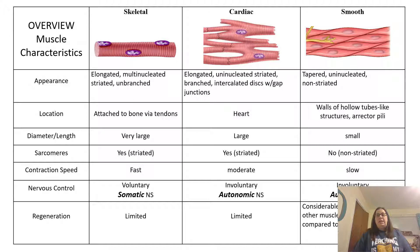For smooth muscle, they are tapered, uninucleated, and not striated at all. The walls of your hollow organs are made up of smooth muscle, as well as the erector pili in your skin. Their diameter and length is small, and they do not have any sarcomeres. Their contraction speed is slow and they are controlled involuntarily by your autonomic nervous system. They do have a considerable ability to regenerate compared to skeletal or cardiac muscles, but it's still very limited compared to other tissues like epithelial tissue.